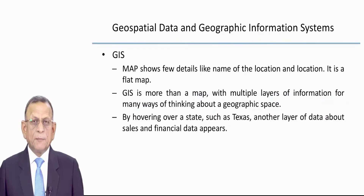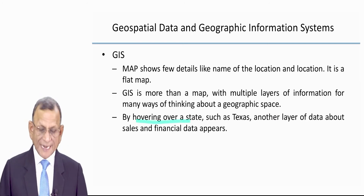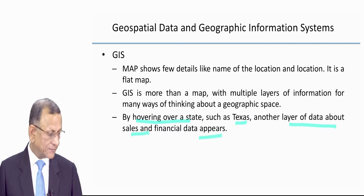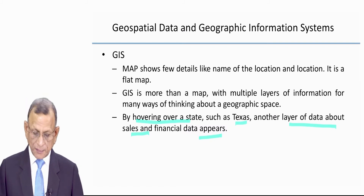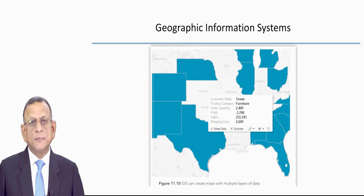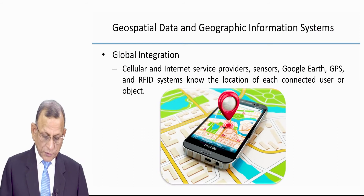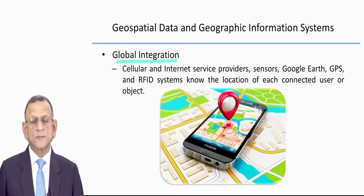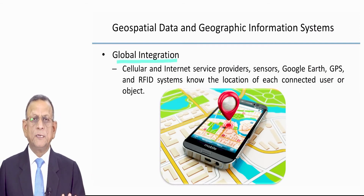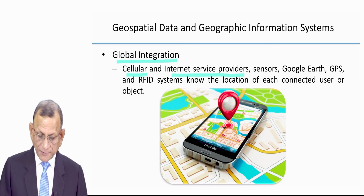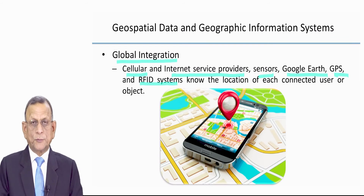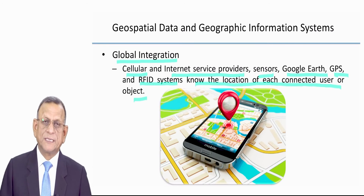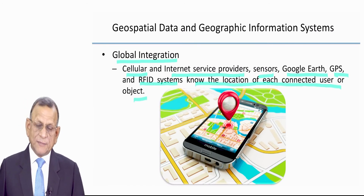A lot of descriptive data appears by moving or hovering over a state such as Texas — layers of data about sales and financial data appear. This is based on global integration: internal data, external data, and live data from multiple channels. Cellular, internet service providers, sensors, Google Earth, GPS, and RFID systems work together to know the location of each connected user or object.